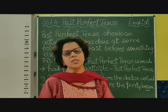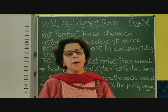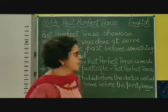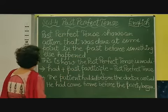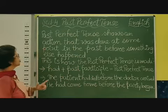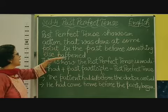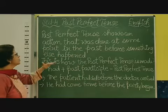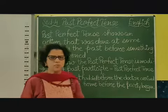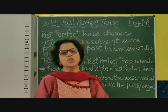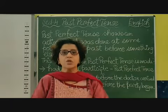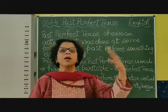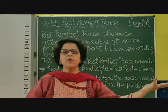Now we are going to discuss about the past perfect tense. Now what is past perfect tense, children? Past perfect tense shows an action that was done at some point in the past before something else. Now what does it mean? Two actions took place in the past, and one has been completed before the other one.